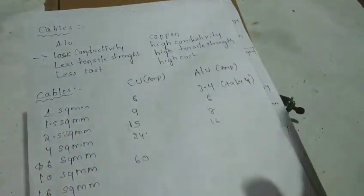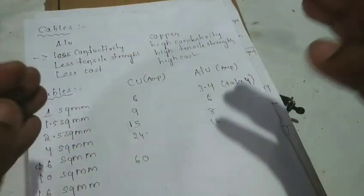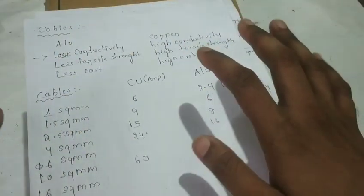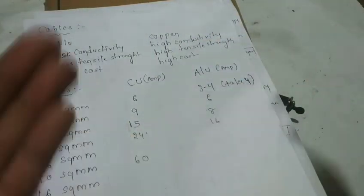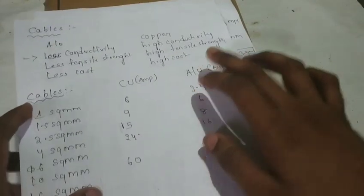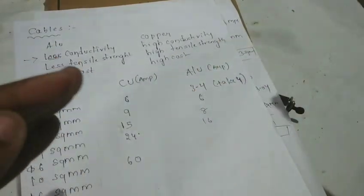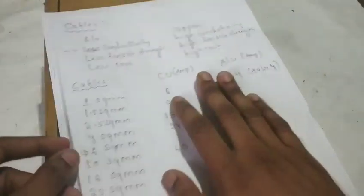Now I have two types of cables: aluminum cable and copper cable. Aluminum cable has lower conductivity and tensile strength, and the cost is lower. Copper has high conductivity and high current flow, but the cost is very high.